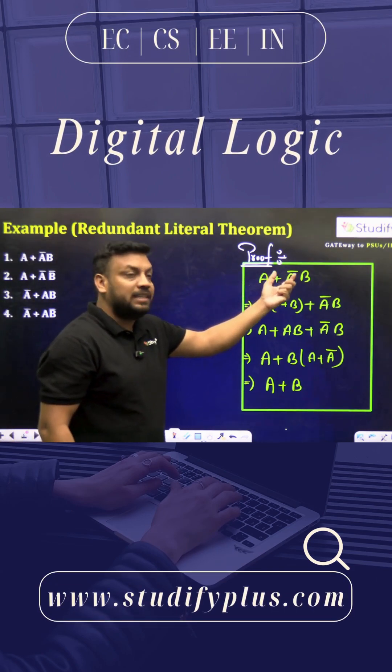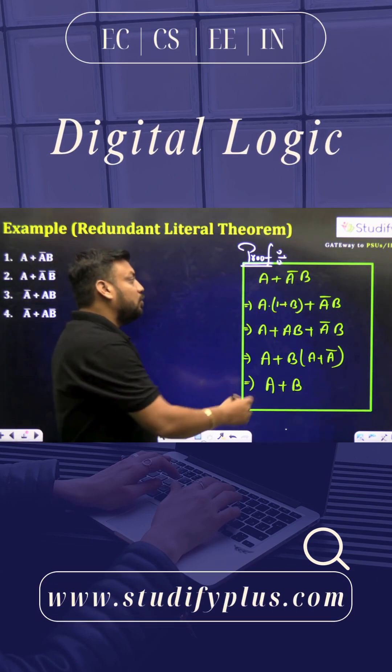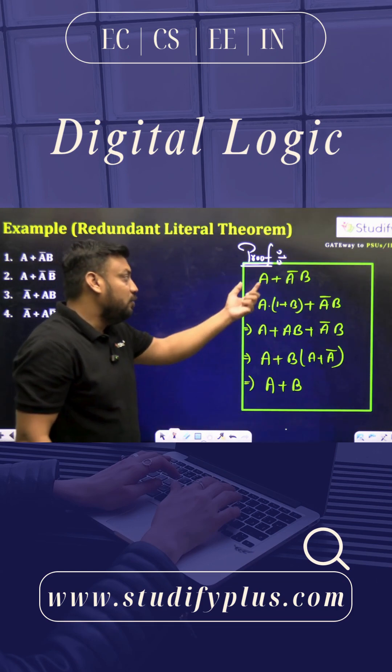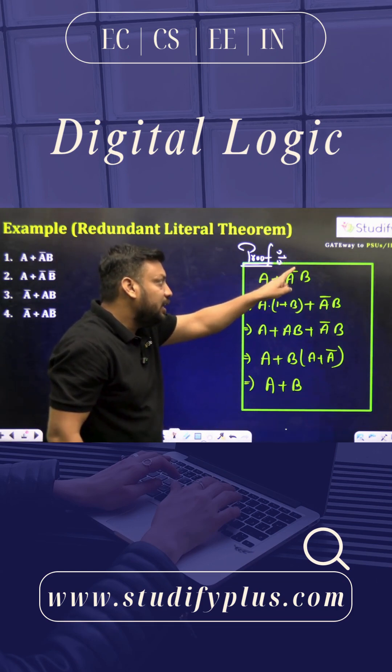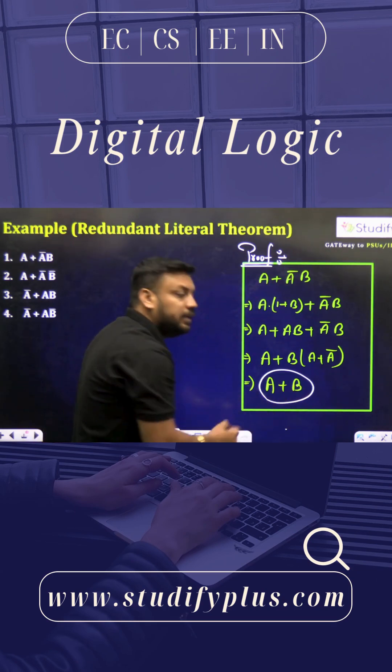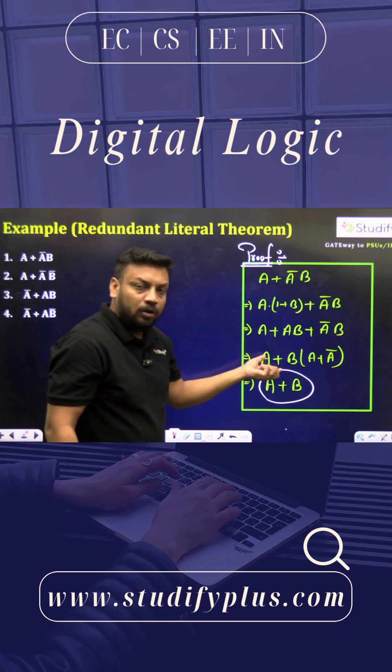Whenever we have the term A + A̅B, and observe that the same term here and its complement here, we can directly write this as A. We can directly ignore or discard this A̅B term, and the final result is nothing but A + B. So here's a small proof of this, a little derivation.